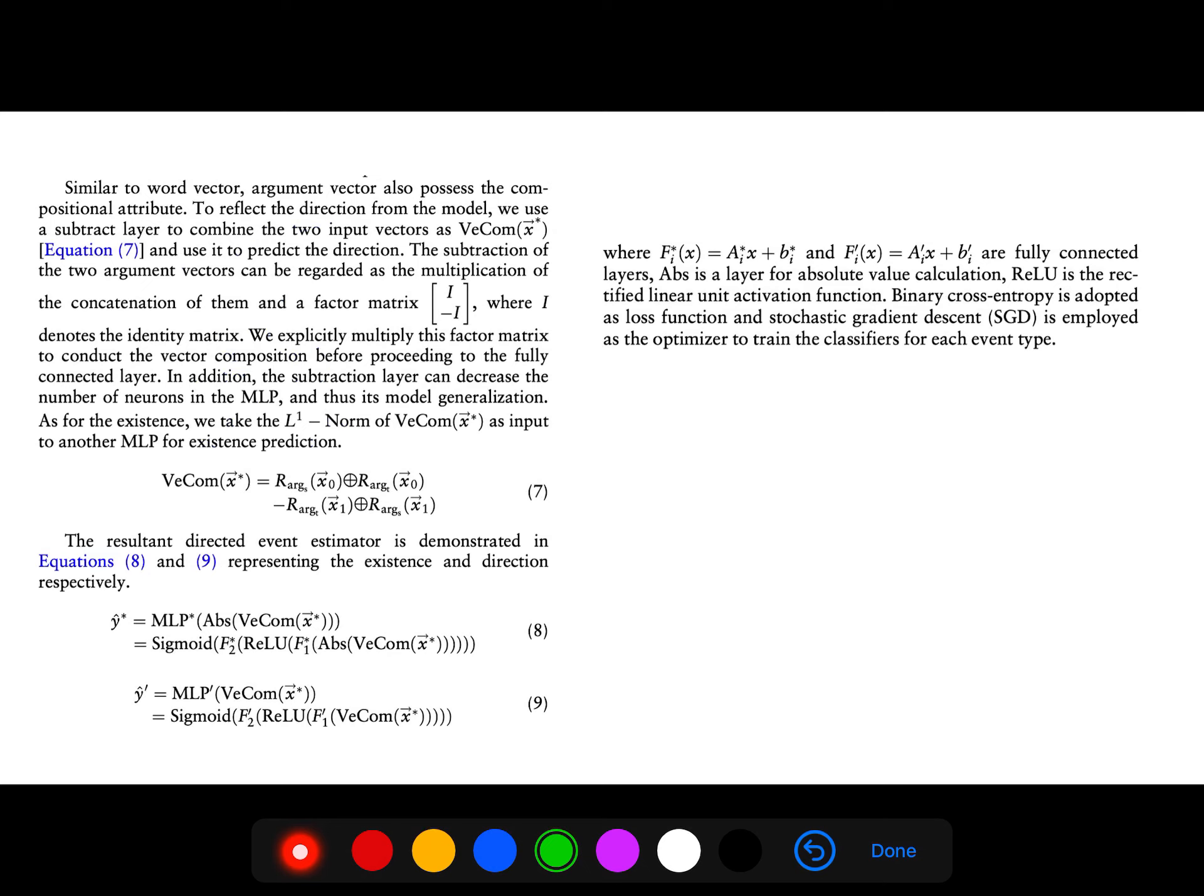So we explicitly multiply this factor matrix to conduct the vector composition before proceeding to the fully connected layer. The subtraction layer can decrease the number of neurons in the multilayer perceptron and thus its model generalization. So the resultant directed event estimator is demonstrated in these equations.